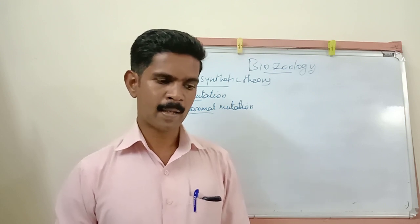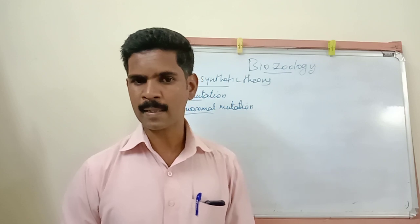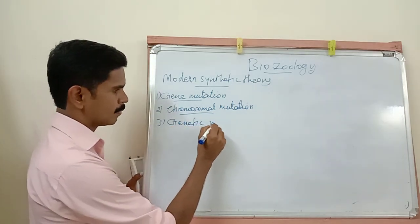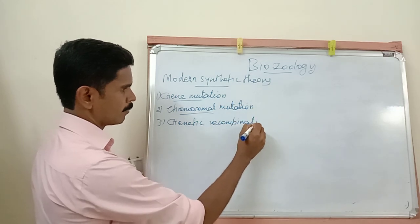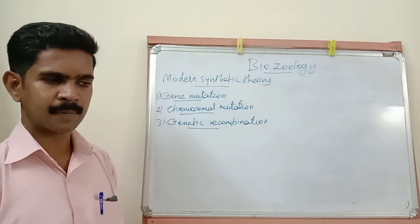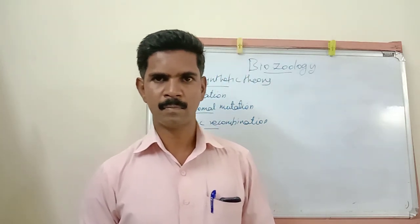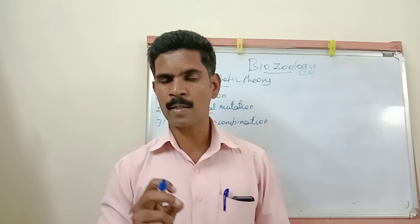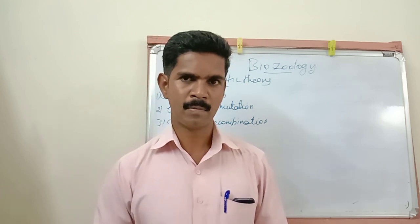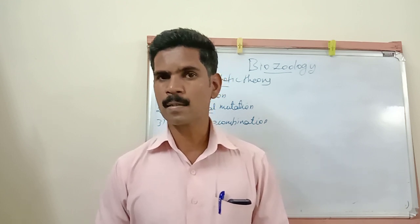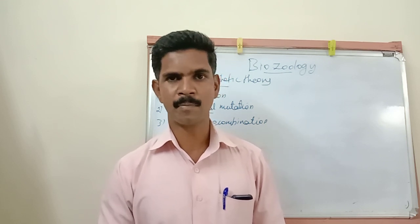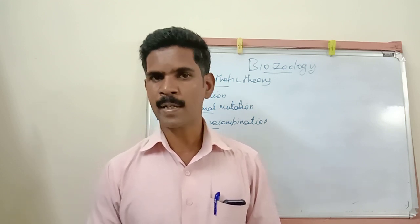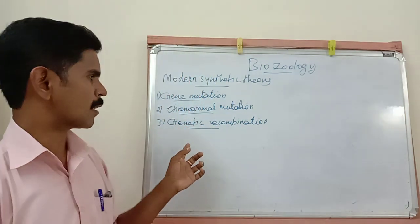The third basic factor of this Modern Synthetic Theory is genetic recombination. During cell division, because of crossing over, some changes take place in the structure of genes, or the gene positions are altered. This leads to some variations in the progeny.